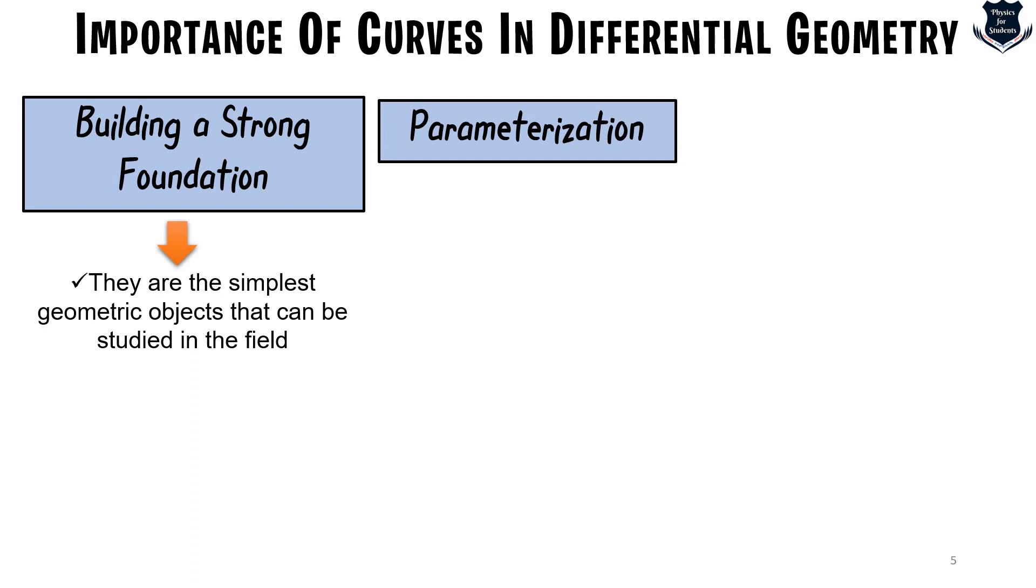The second thing is what is called parametrization. Curves are often defined by parametric equations which describe their position as a function of a parameter. Learning about curves involves understanding the concept of parametrization and how it relates to the geometry of the curve. Parametrization allows us to do precise calculation of important properties such as tangent vectors, curvature, arc along the length of a curve.